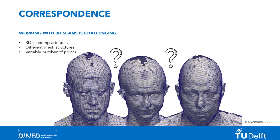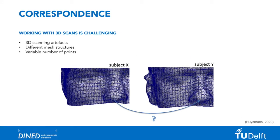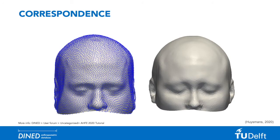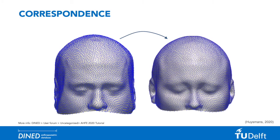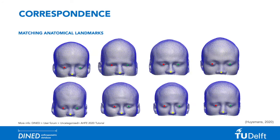After capturing your model, you are not yet ready to use it for statistical shape analysis. It is likely that a raw scan contains ranges of artifacts, such as holes and spiky edges. Besides that, all your scanned models will have different mesh structures, which makes it impossible to compare them to each other. To link a specific point of one scan to the same anatomical reference of another, a correspondence technique is used to provide the scans with a similar mesh frame.